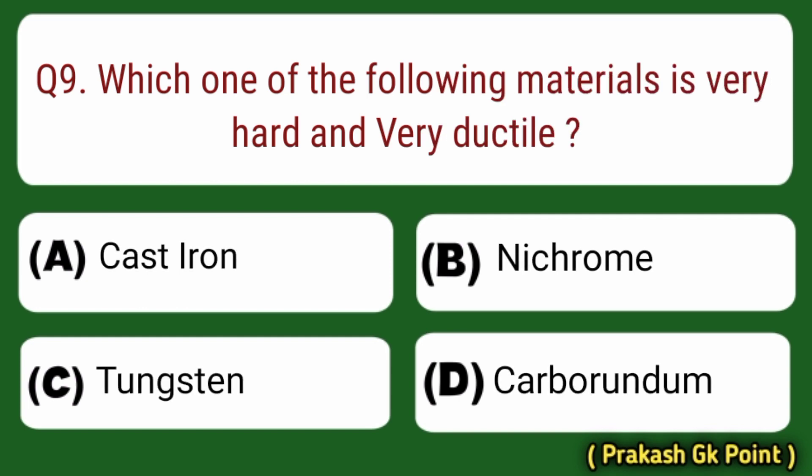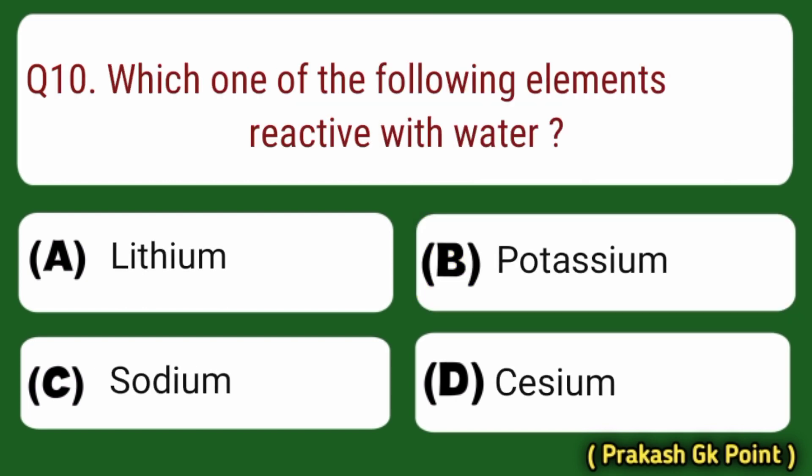Next question: which one of the following materials is very hard and very ductile? Answer: Option B — Nichrome.